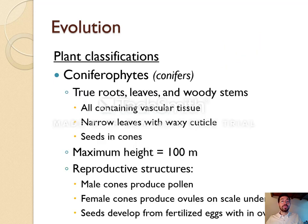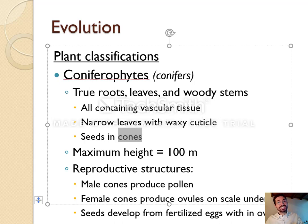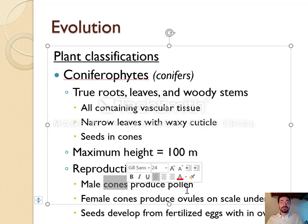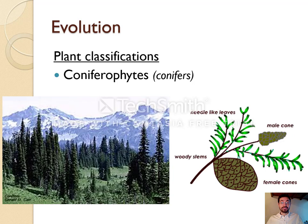Conifers, or coniferophytes, also have real roots, leaves, and stems with vascular tissue. They have narrow, needle-like leaves with thick waxy cuticles to prevent evaporation. Unlike mosses and ferns, they have real seeds that are contained in cones — that's where their name comes from: trees with cones. They can grow up to 100 meters tall and have cones containing seeds and pollen. If you enjoy eating pine seeds in pesto, those come from coniferophytes.